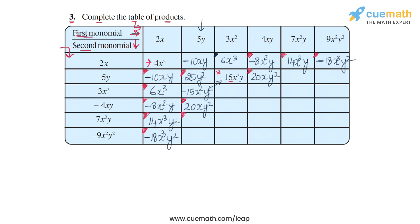The cell (-5y) × 7x²y gives -35x²y², since (-5) × 7 is -35 and y × x²y is x²y²; the symmetric cell is also -35x²y². Then (-5y) × (-9x²y²) gives 45x²y³, since (-5) × (-9) is 45 and y × x²y² is x²y³; the symmetric cell is also 45x²y³.